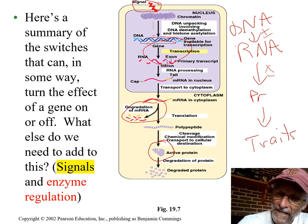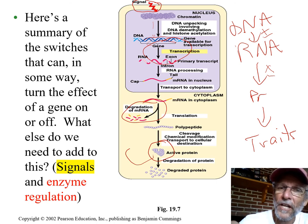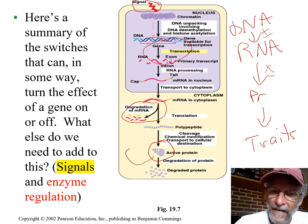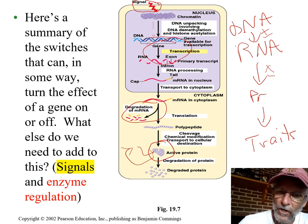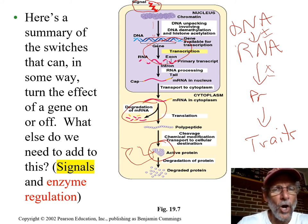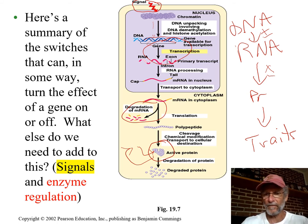Remember back when we talked about enzymes in Unit 2 — enzymes themselves can be part of a regulatory system that has nothing to do with DNA, where one of the end products of that enzyme inhibits it allosterically and shuts it off. All kinds of regulatory things have evolved.